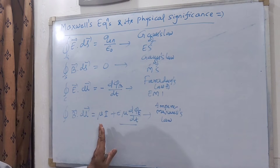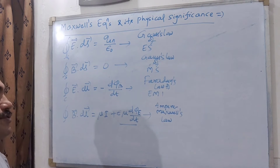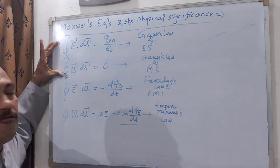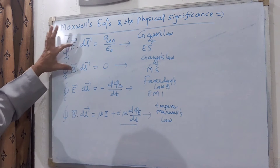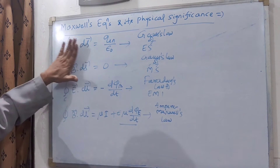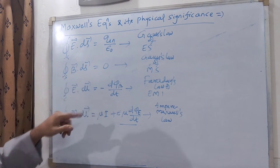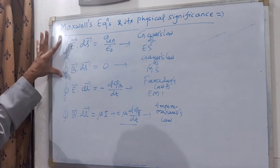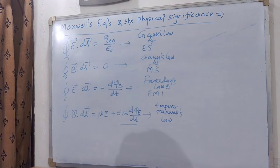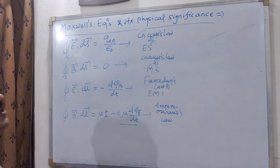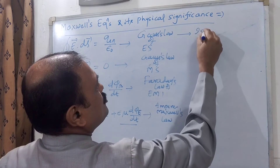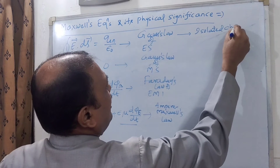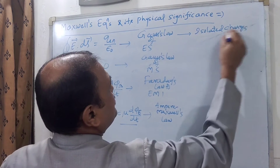The fourth equation is the original Maxwell equation. Looking at the first pair of equations, they are time-independent equations — they do not contain any time-varying terms. So the first two equations are time-independent, steady-state equations. The first equation confirms that isolated charges are possible.